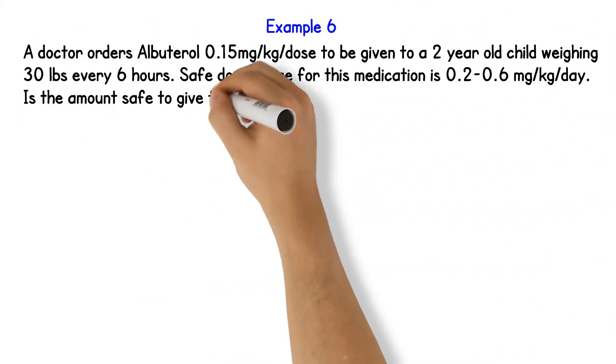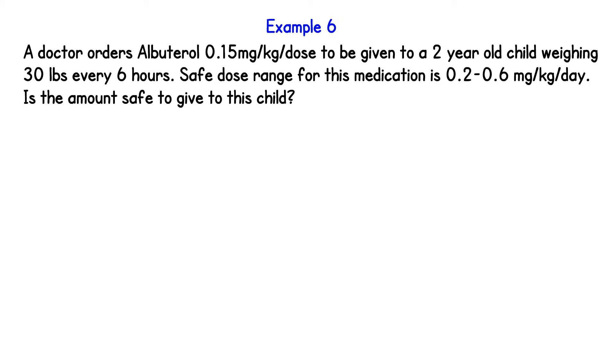Okay guys, let's see what we got. Here we have a doctor's order of albuterol, 0.15 milligram per kilogram per dose to be given to a 2-year-old child weighing 30 pounds every 6 hours. Safe dose range for this medication is 0.2 to 0.6 milligram per kilogram per day. Is the amount safe to give to the child?